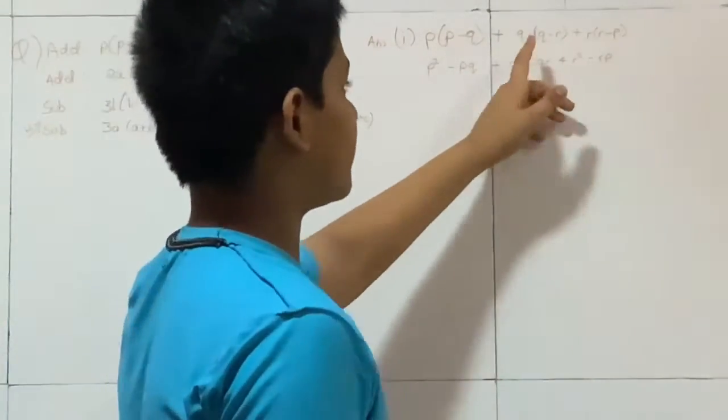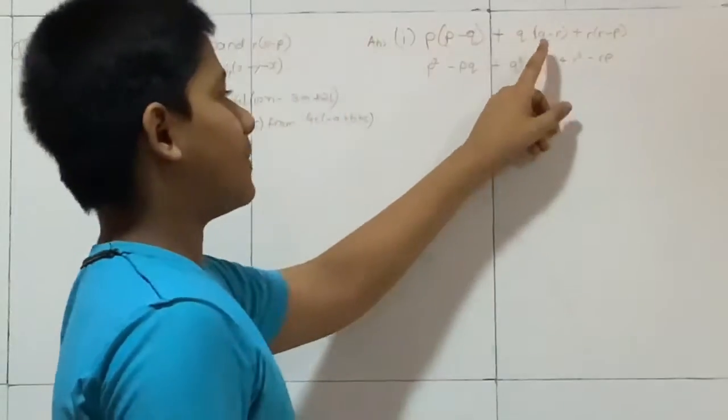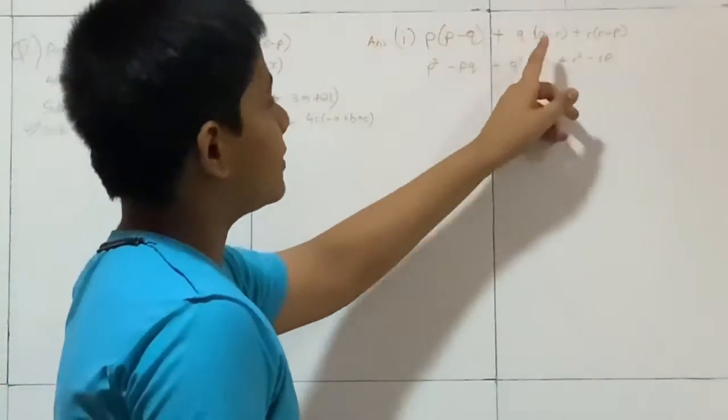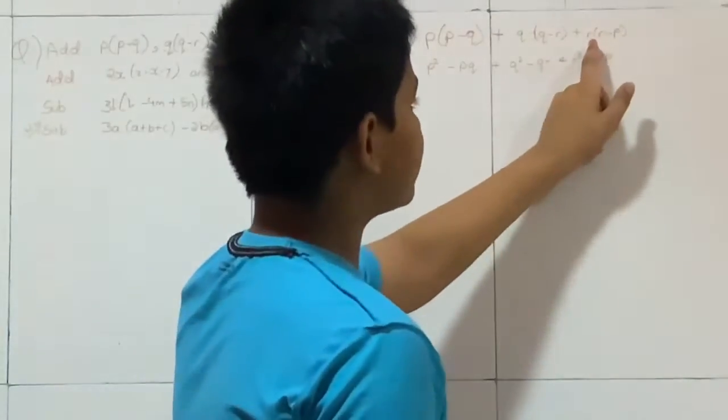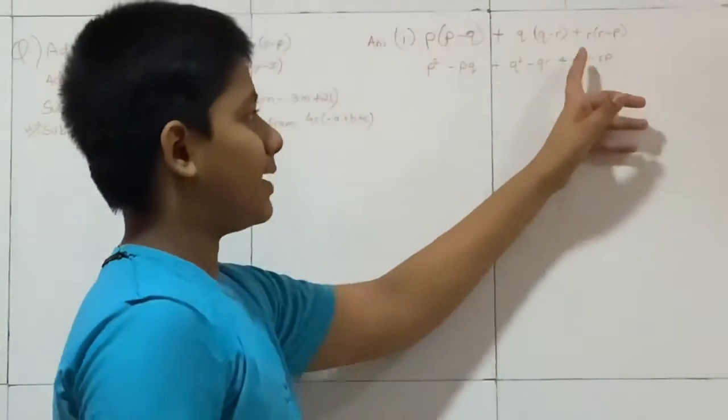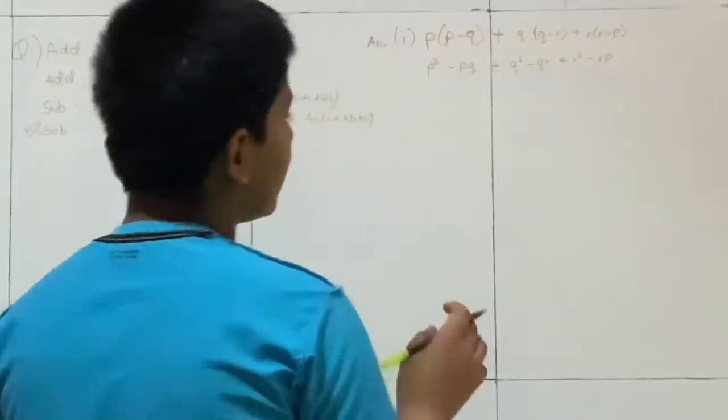Like that only I did for the same Q and R. Q multiplied by Q is Q square and Q multiplied by R is QR. And the last one is R into R is R square and R into P is RP.